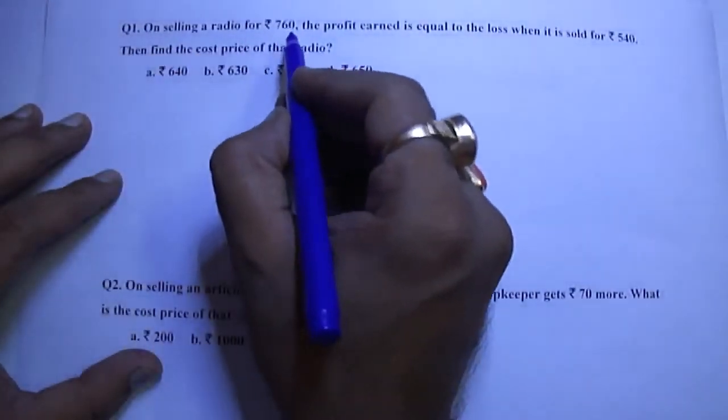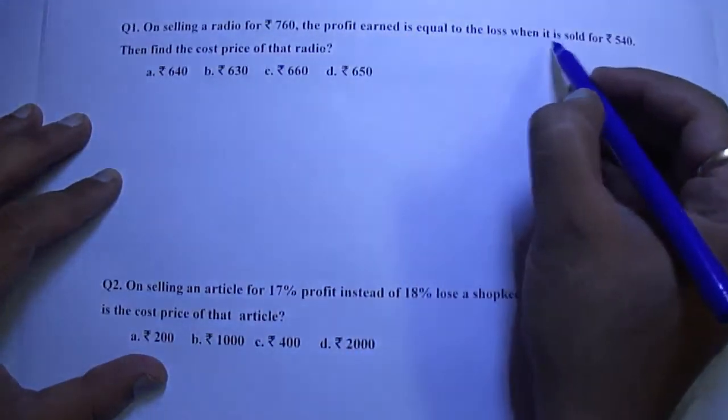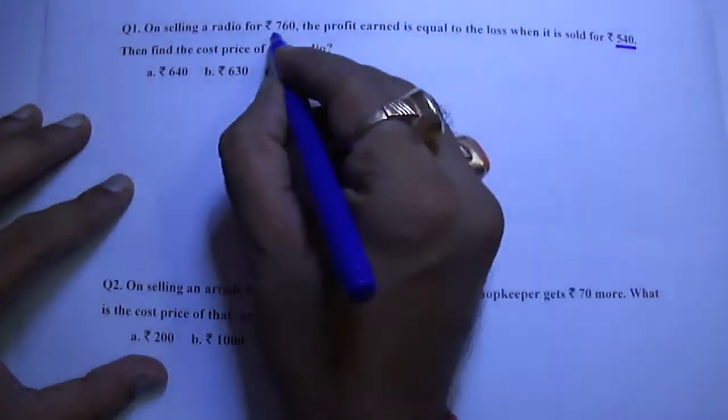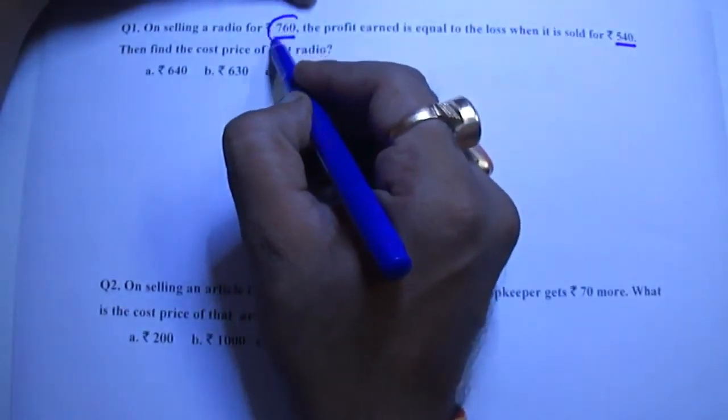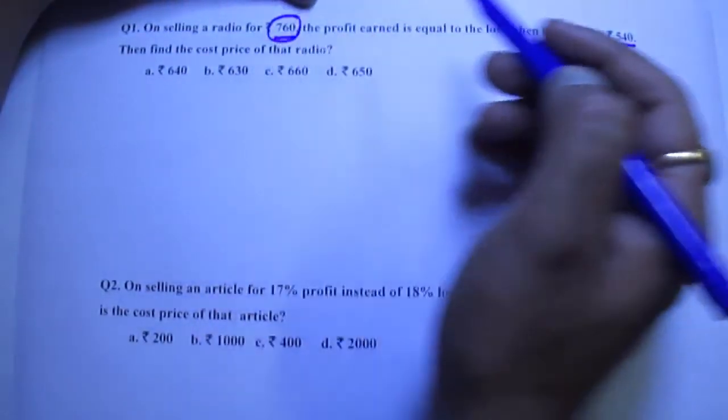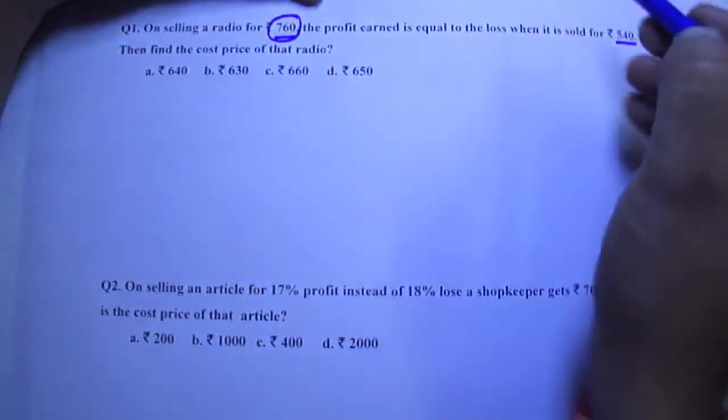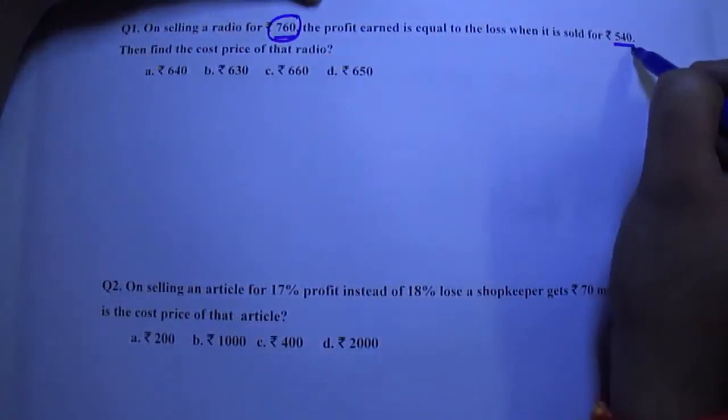On selling a radio for Rs.760 the profit earned is equal to the loss when it is sold for Rs.540. In this case when we sell an article at Rs.760 we get a profit and when we sell it for Rs.540 we get a loss.